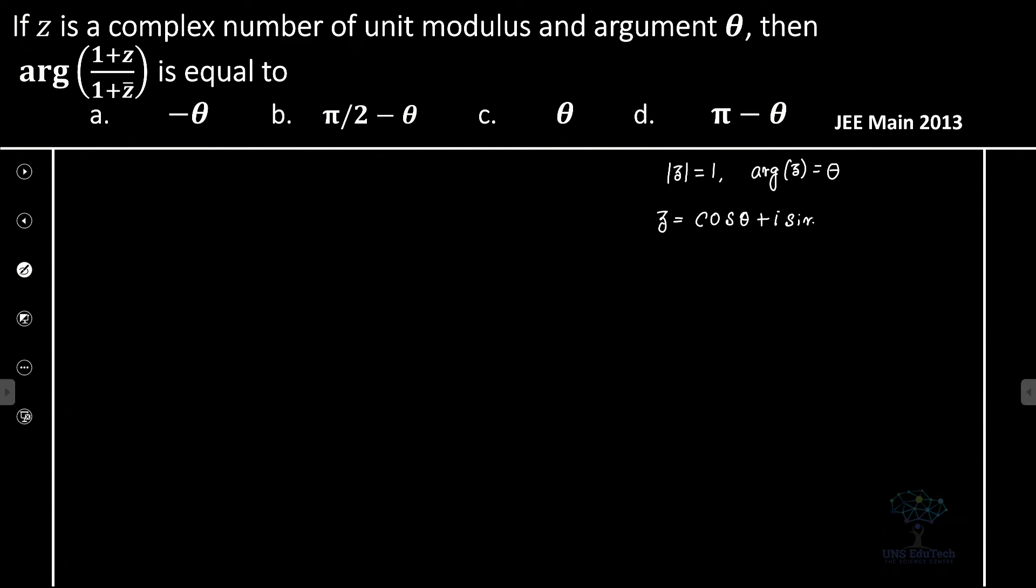Now, in this particular problem we are going to find out what is z bar. So z bar is the complex conjugate, that is cos theta minus i sine theta. That's actually for this particular problem, this is my z and this is my z bar.